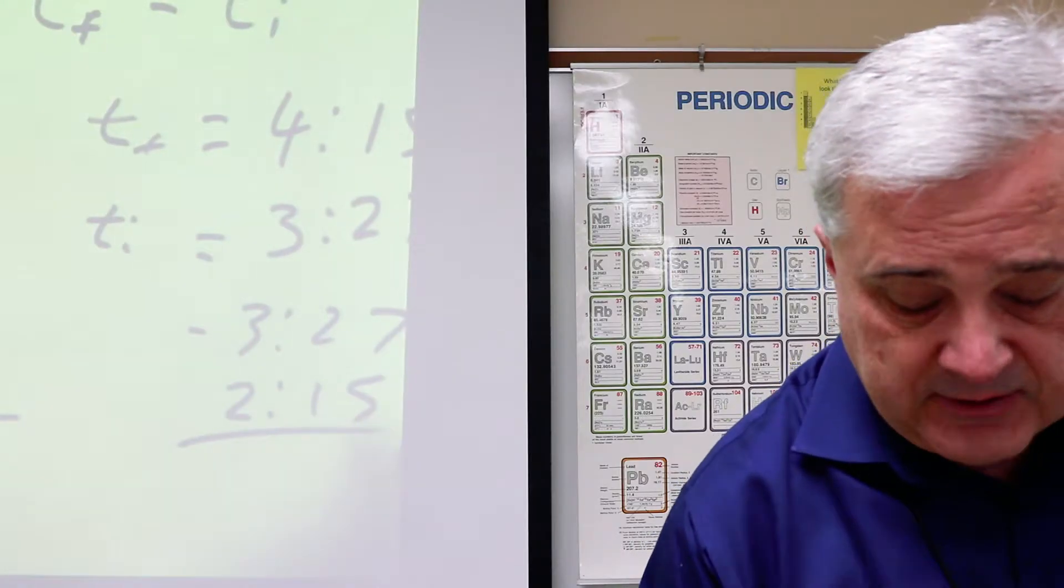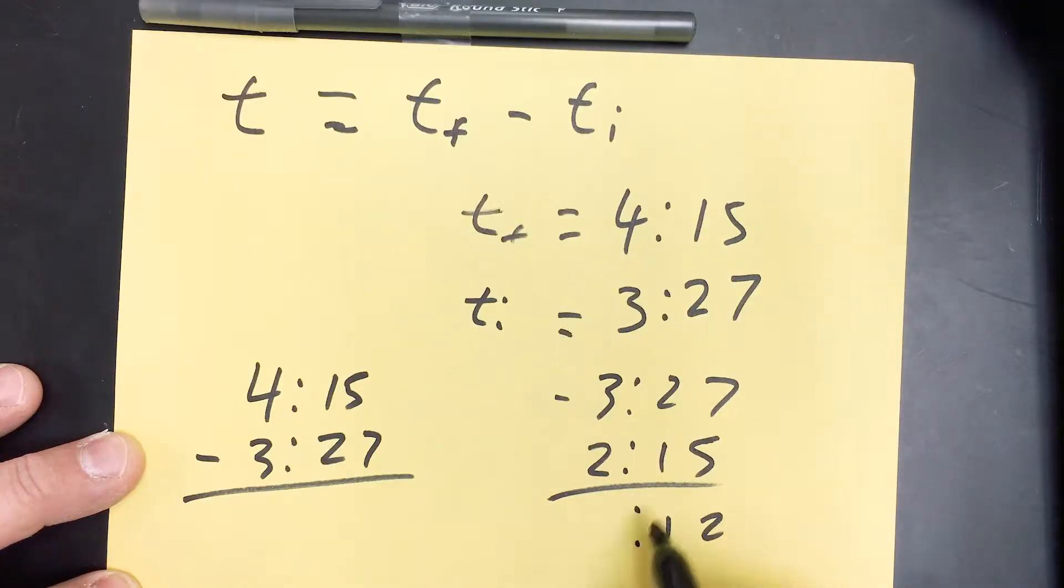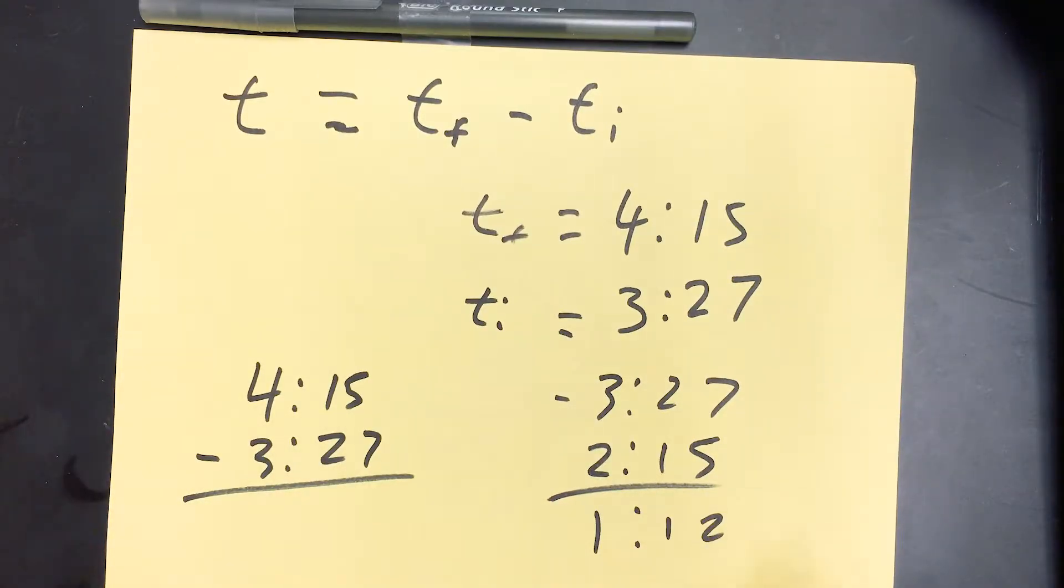Alright, subtracting, you have 7 minus 5 is 2, 2 minus 1 is 1, 3 minus 2 is 1. So it was a 1 minute, 12 second lap.